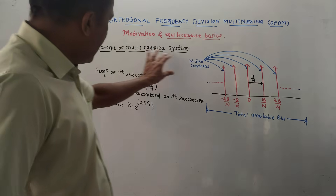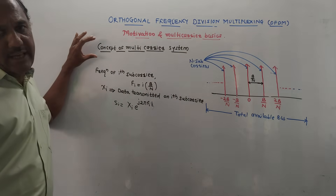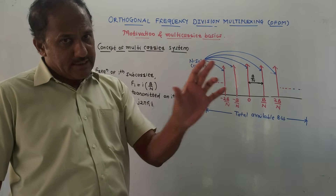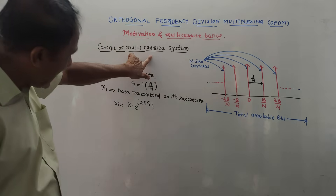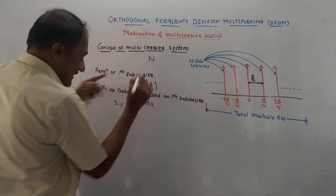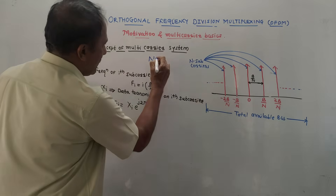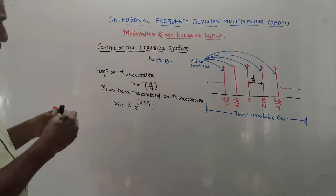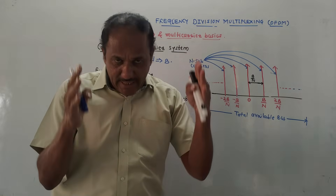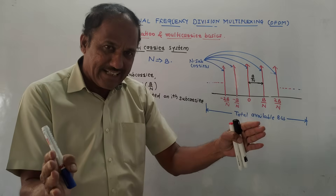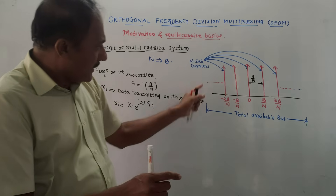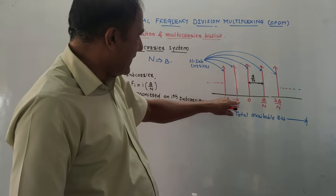Next is the multi-carrier system. As the name indicates, multi-carrier means many carriers are used. We will be using N sub-carriers for the entire bandwidth B. We have to split the data into different parts and each part is transmitted using a different carrier. I have shown a conceptual diagram of the multi-carrier sub-system with N different sub-carriers over the total available bandwidth.